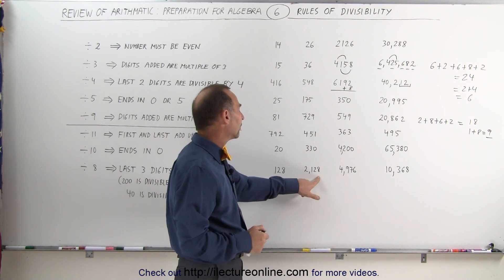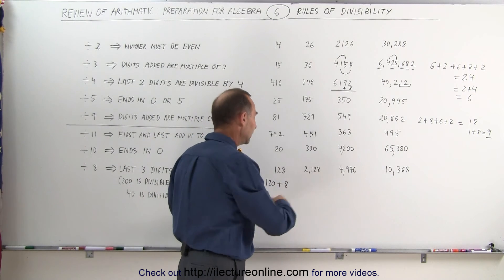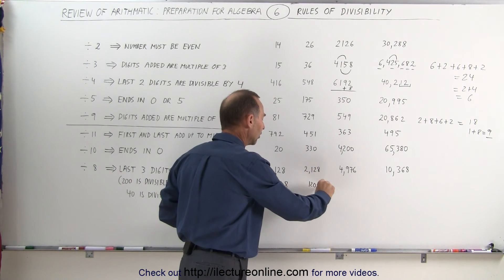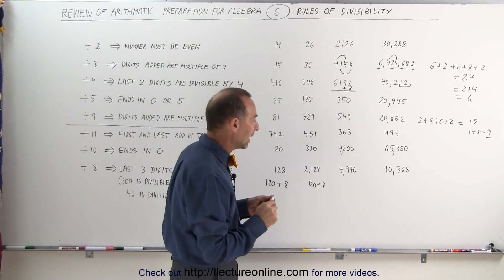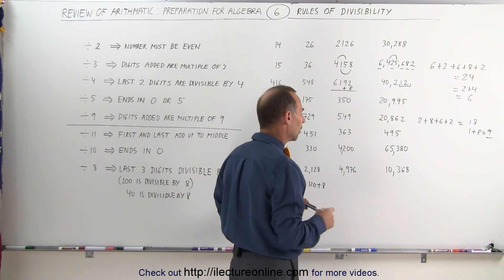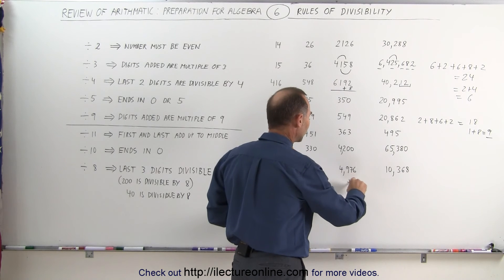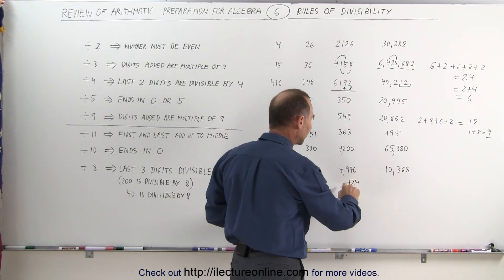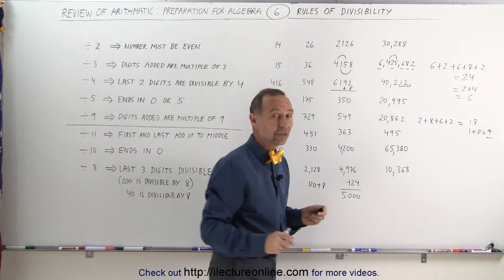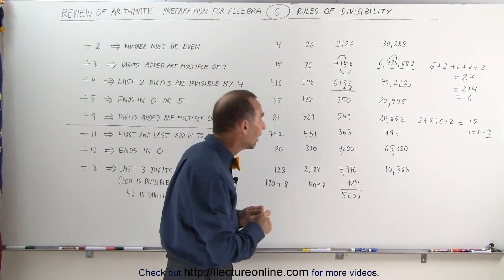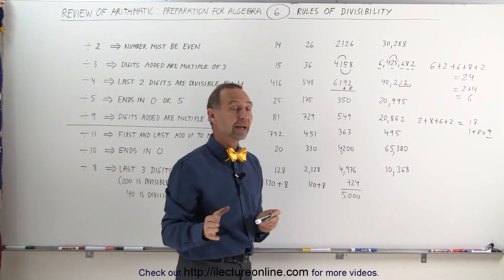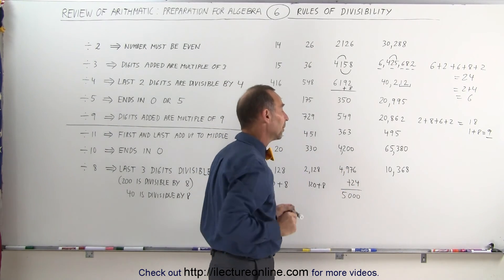For 2,128, I look at the last three digits — 128 — which is 120 plus 8, just like before. So I know that must be divisible by 8. How about 4,976? All I need is to add a multiple of 8 to this. If I add 24, I get 5,000. Since it ends in an even thousand, we know that's divisible by 8. And since it's only 24 short of that, and 24 can be divided by 8, this number is divisible by 8.